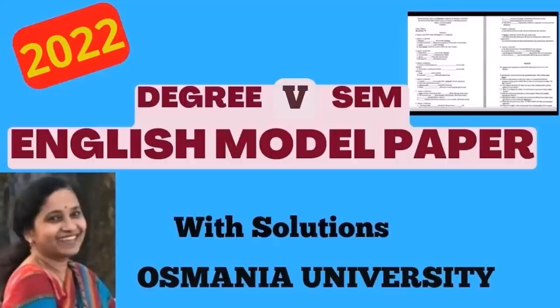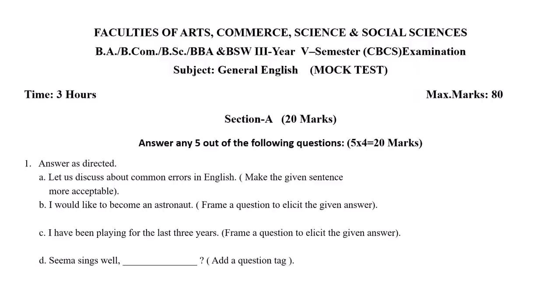Hello everyone. Today we are going to discuss the degree 5th English model paper along with solutions, which is prepared on the pattern given by Usmania University. Your question paper looks somewhat like this and this is a kind of mock test for 5th semester. Your question paper comprises two sections: Section A, objective type, and Section B, essay type.